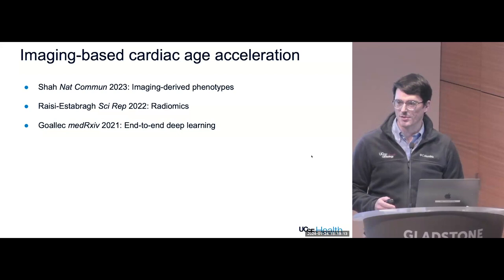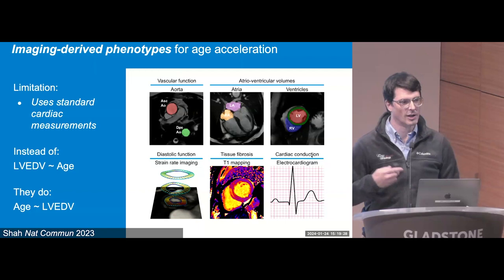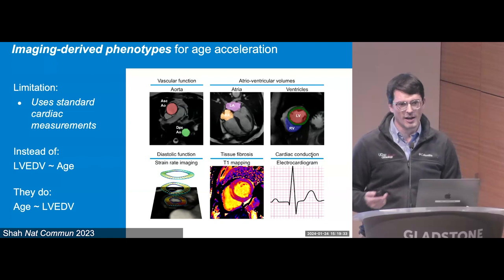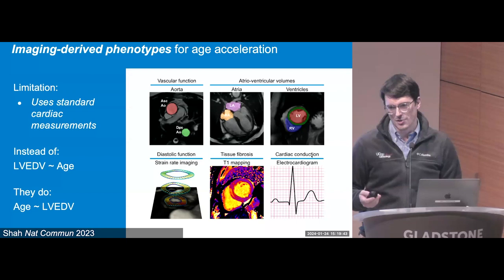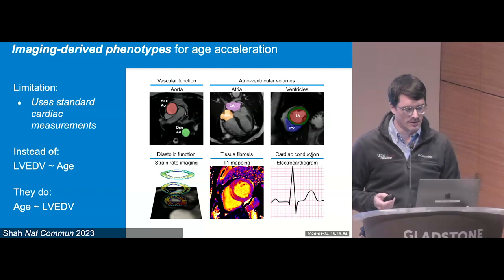People have thought about this for cardiac imaging before. I'll walk through three papers that have looked at this. The first uses imaging-derived phenotypes — structures and measurements cardiologists know and talk about, such as aortic diameter, atrial size, ventricular size, fibrosis imaging, and EKGs. This simply inverts the usual association: instead of using age to estimate end diastolic volume, we flip it around and predict age from end diastolic volume, aortic diameter, and so on.